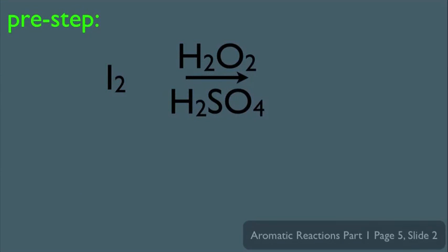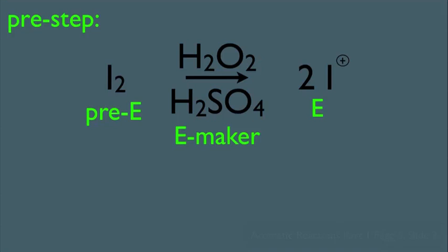What we get as a product is two I+. Notice this is definitely playing the role as the pre-electrophile, this is the electrophile maker, and we've made the I2 into a full-fledged electrophile with a positive formal charge. The mechanism here is not so important and is typically beyond the scope of an organic chemistry course.